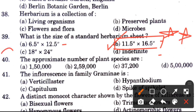Question 40: The approximate number of plant species — options are 1,50,000; 2,59,000; 37,200; or 5 crore. The answer is B, 2,59,000.